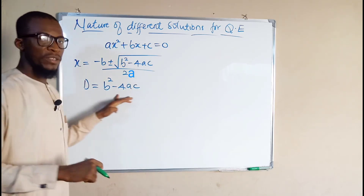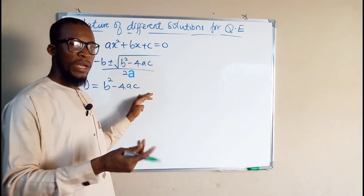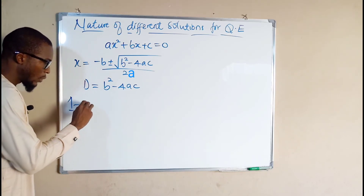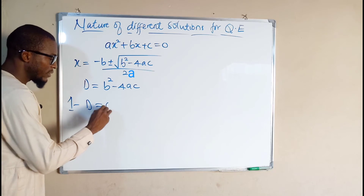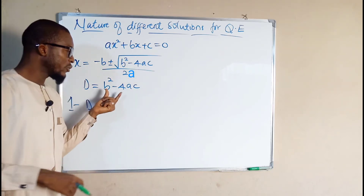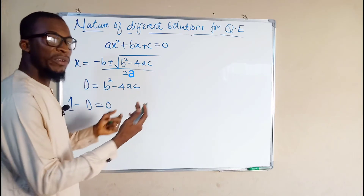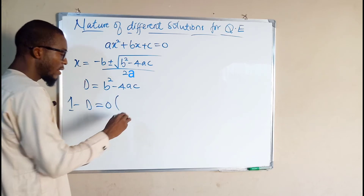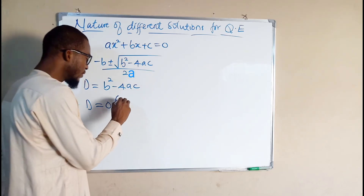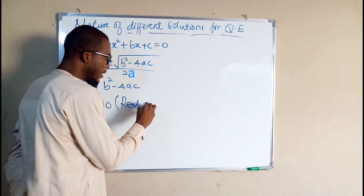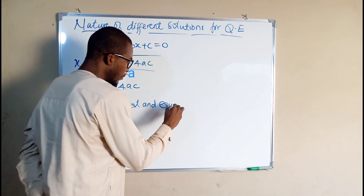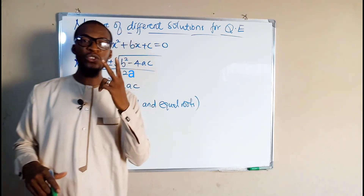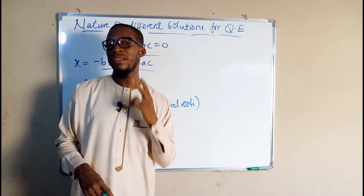So this discriminant is used to determine the three basic solutions we have for quadratic equations. The first one: when d equals zero, if you substitute these values for any quadratic equation and simplify, and realize the solution is equal to zero, we say that quadratic equation has real and equal roots — meaning the equation has two solutions, but the solutions are exactly the same.